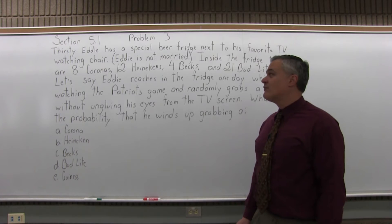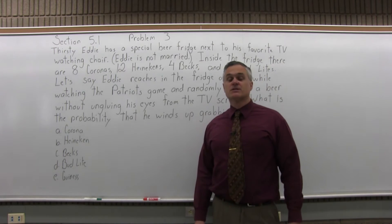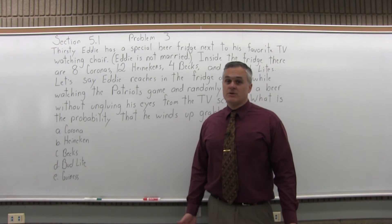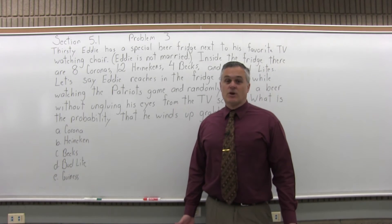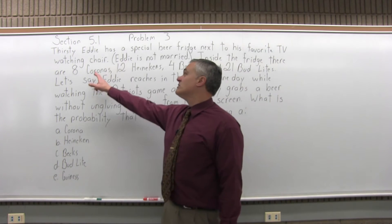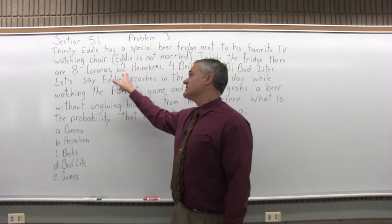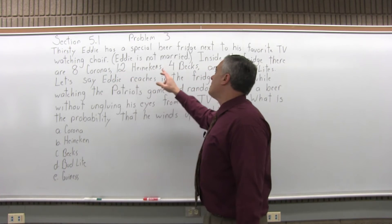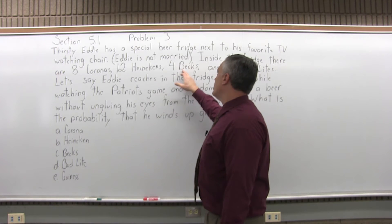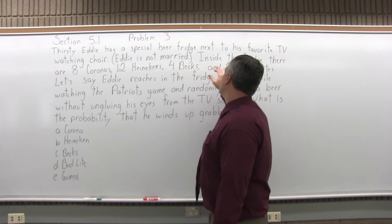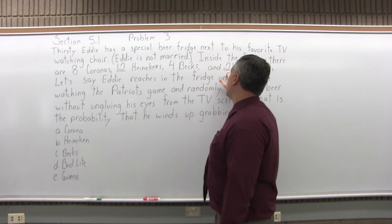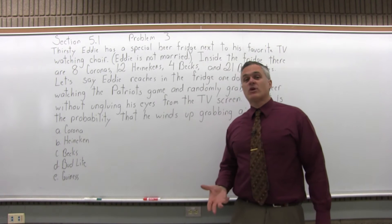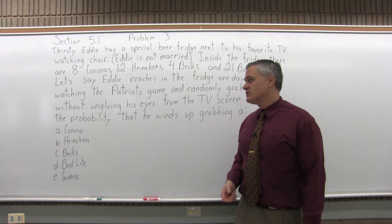First, you need to figure out how many beers there are in the fridge altogether. If we add 8 Coronas plus 12 Heinekens, that's 20 beers. Plus 4 Becks is 24. Plus another 21 Bud Lights is 45. So altogether, there are 45 bottles of beer in the fridge.